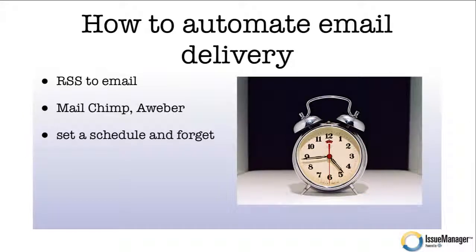MailChimp and AWeber check your site every day to see if there are new stories. If there's a new story, they use that RSS feed to pull the story off your site and match it up to your email list — people who have subscribed — and it sends your stories to their email address automatically. You don't have to do a thing. Unfortunately, with Constant Contact you have to log in, copy and paste all your stories, and mail it out manually, which takes time. With this setup, it happens automatically. You set a schedule — every Friday, every two weeks, once a month — set it and forget it.